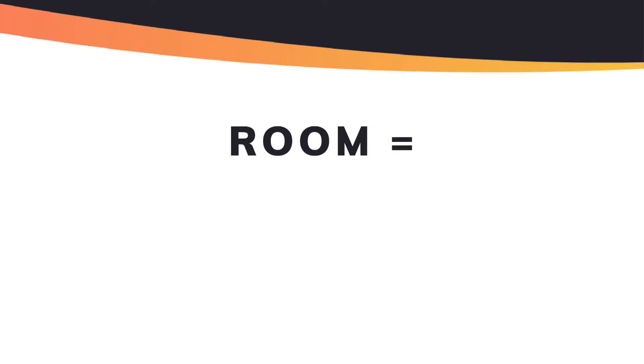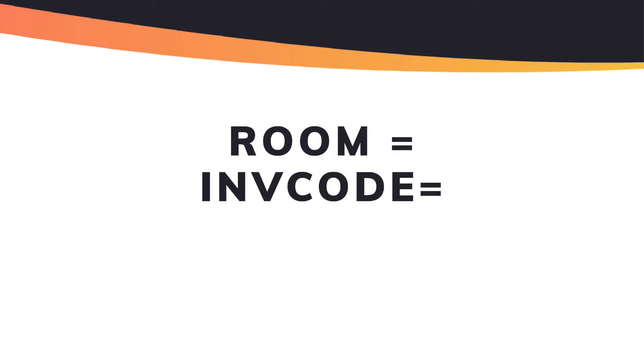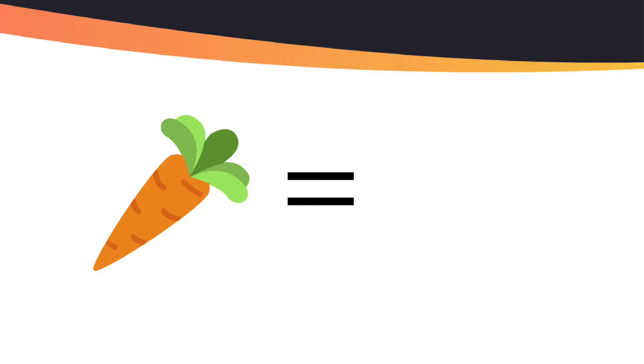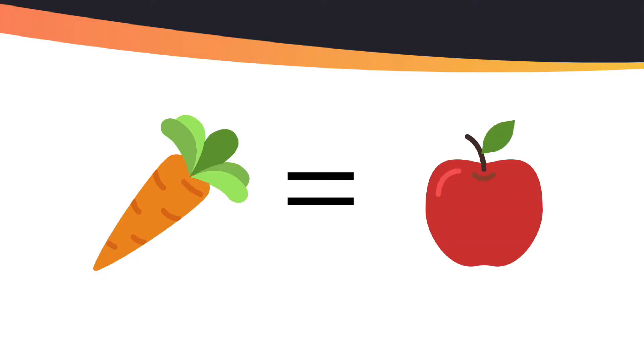Let's take the example of availabilities. You have one room available — room X is available. Now, different systems call a room differently: some call it a 'room,' others call it an 'INF code,' others call it an 'object' or 'unit.' The challenge of the interface is to interpret this — they have to say: when I say 'unit,' you understand 'room.' So they basically have to translate 'carrot' into 'apple.'